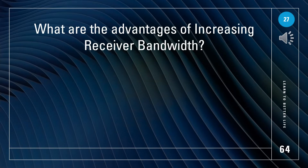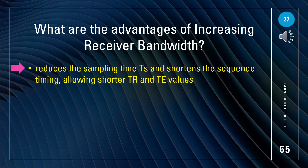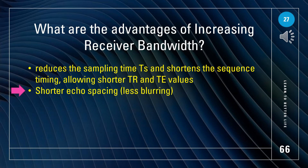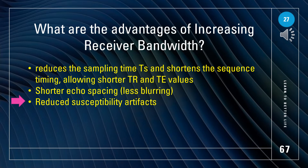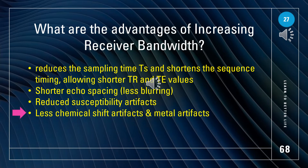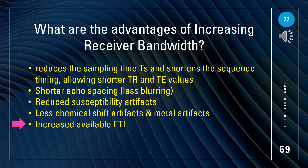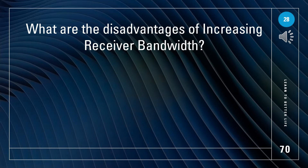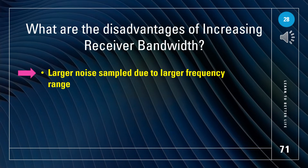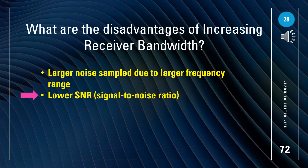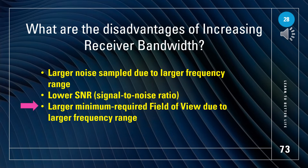Advantages of increasing receiver bandwidth: high received bandwidth reduces sampling time T and shortens sequence timing, allowing shorter TR and TE values; shortens echo spacing resulting in less blurring; reduces susceptibility artifacts; reduces chemical shift and metal artifacts; and increases the available ETL. Disadvantages of wide receiver bandwidth: larger noise sample due to larger frequency range, lower SNR, and requires a larger minimum field of view due to the larger frequency range.